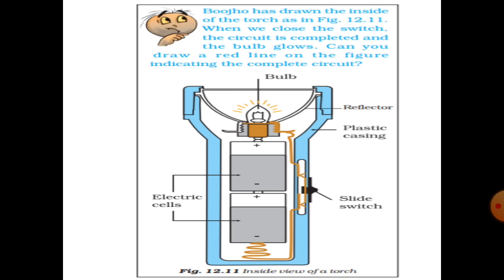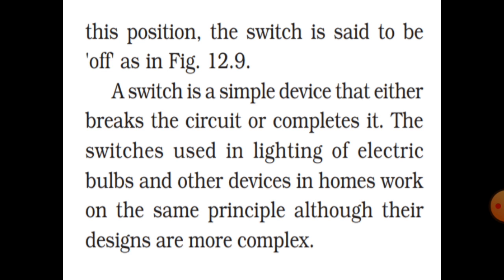Bujo has drawn the inside of the torch as shown in the figure. The torch has two electric cells, a light switch for on and off, reflectors, plastic casing, and a bulb. When the switch is in the off position, the circuit is broken. A switch is a simple device that either breaks the circuit or completes it. The switches used for electric bulbs and other devices at home work on the same principle, though their design is more complex.